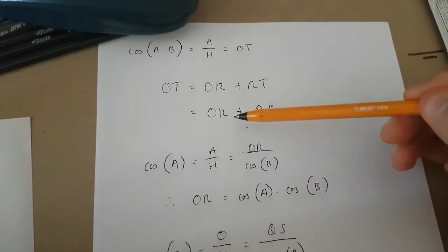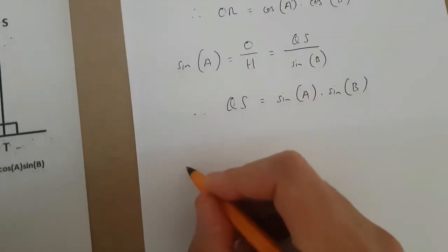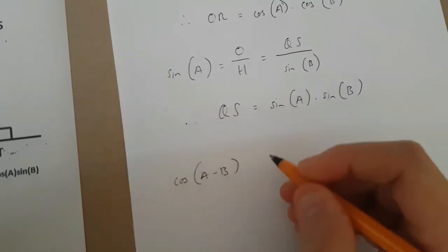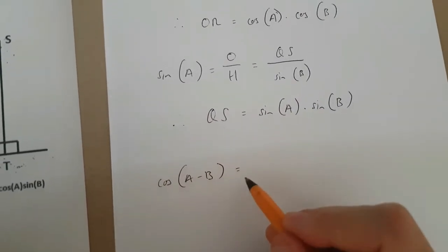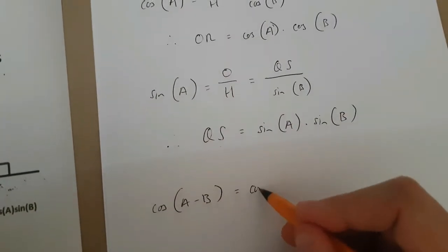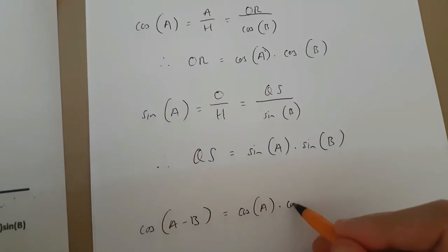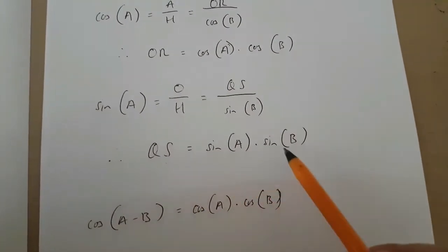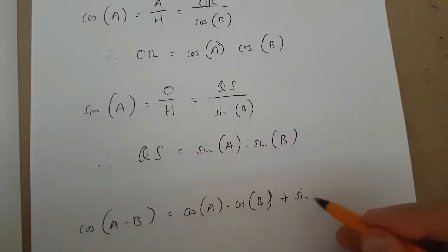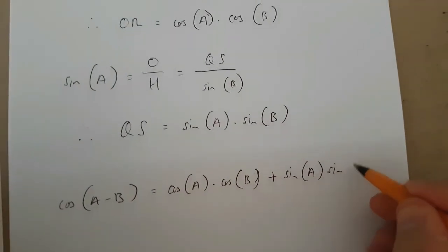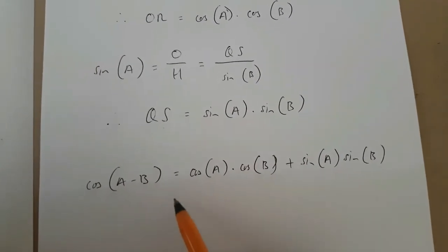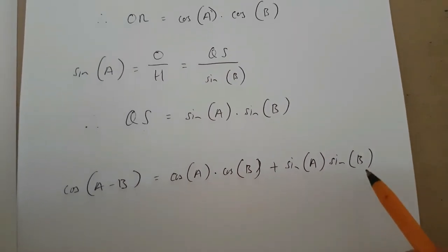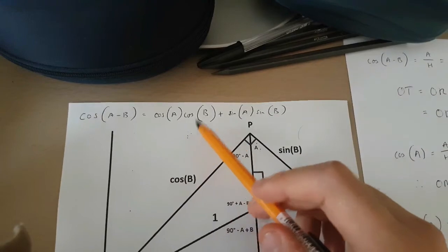Now that we've found OT, OR, and QS, we can prove that this is true. OT is cos(A-B). And this is going to be equal to OR, which is cos(A) times cos(B), plus QS, and QS is sin(A) times sin(B). Which means that cos(A-B) equals cos(A)cos(B) plus sin(A)sin(B). And we've proven that this up here is true.